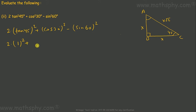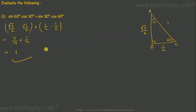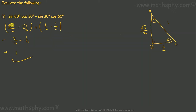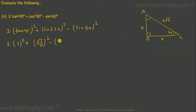2 into tan 45 — which is AB over BC — equals 1, so we have 2 into 1 squared. Cos 30 is root 3 over 2, so cos squared 30 is 3 over 4. Sin 60 is also root 3 over 2, so sin squared 60 is also 3 over 4. This gives me 2 plus 3 over 4 minus 3 over 4. The 3 over 4 terms cancel, leaving a value of 2.